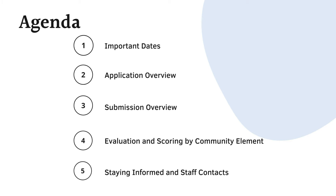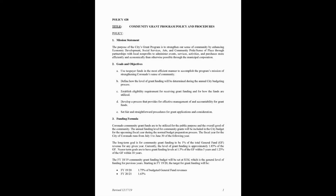The goal of today's webinar is to walk through the revised Community Grant Program documents. We will review important dates, application and submission requirements, and provide information on how to get into contact with staff for technical assistance. Please note, at this time we will not be able to provide details on the amount or method of funding allocations. As of right now, per Council Policy No. 28, funding is set at 1.65% of general fund revenues for FY 2020-21, estimated at approximately $788,000.